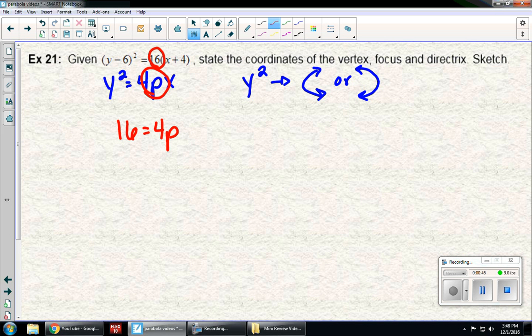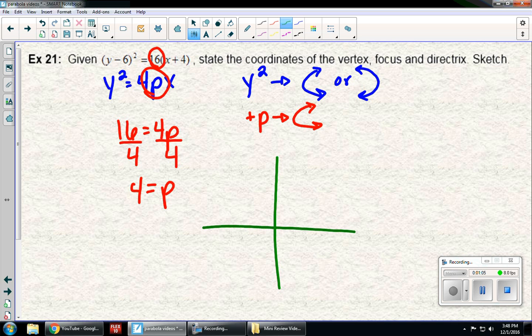I can now solve for p by dividing both sides by 4. So p equals 4. I have a positive p, which tells me right or left. My positive numbers are on the right, so that's the direction this is going to open. Now I want to sketch my picture.